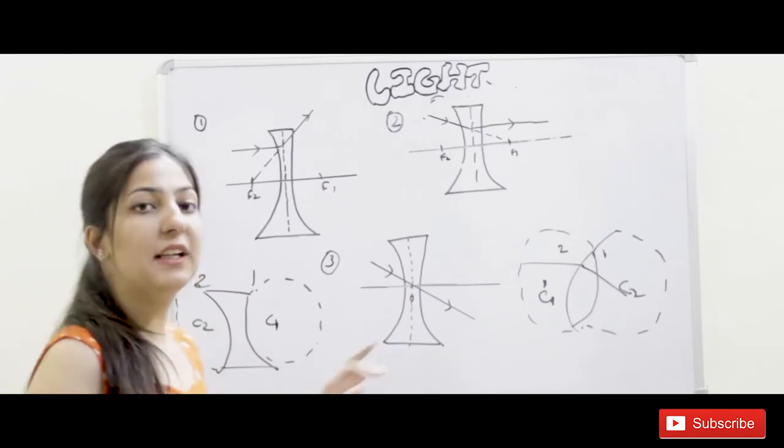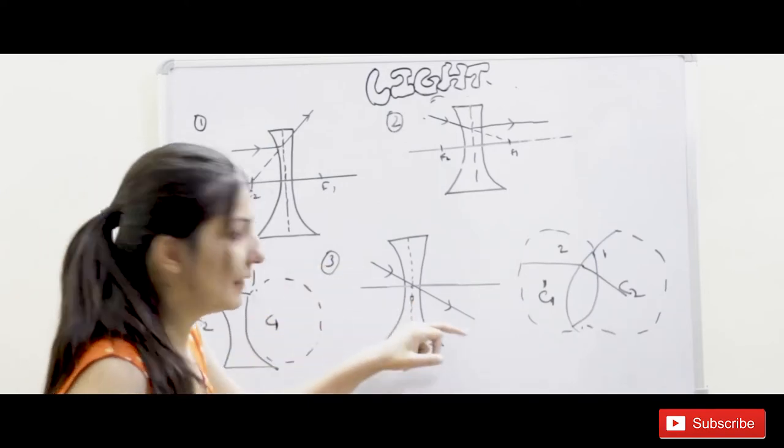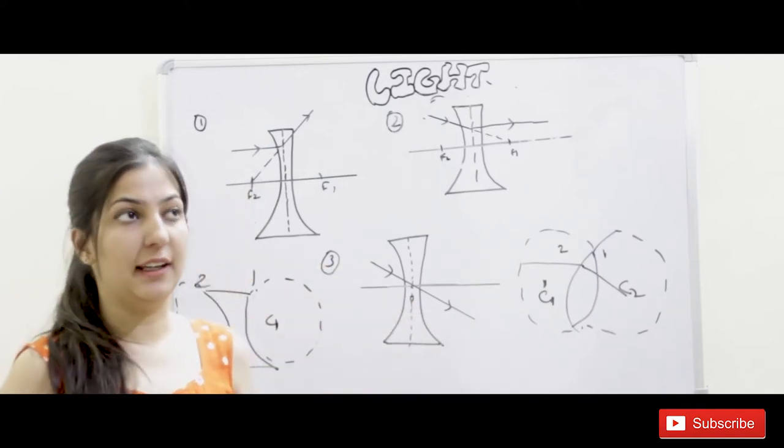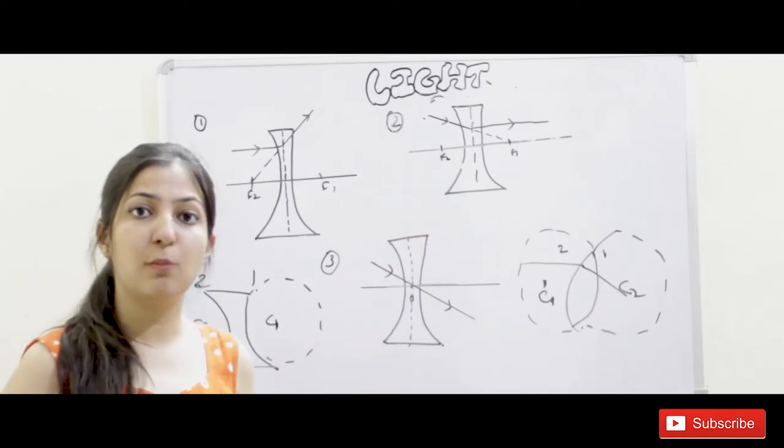After that, the third rule is that the optical center is such a point where the rays are undeviated. If we send the optical center, the rays are undeviated. I hope you have three rules clear, because if we have rules clear, we can make image formation very easily.